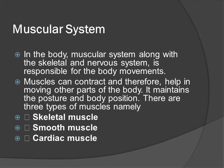In the body, the muscular system along with the skeletal and nervous system is responsible for body movements. Muscles can contract and therefore help in moving other parts of the body. It maintains the posture and body position. There are three types of muscles: skeletal muscle, smooth muscle and cardiac muscle.